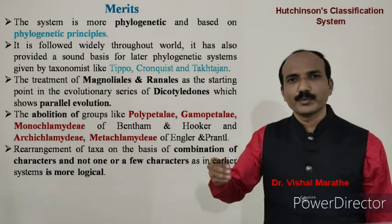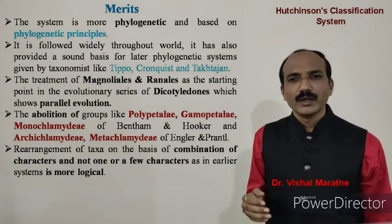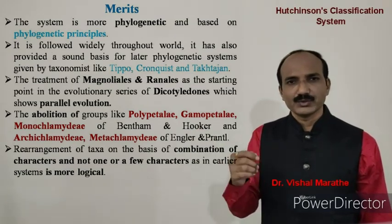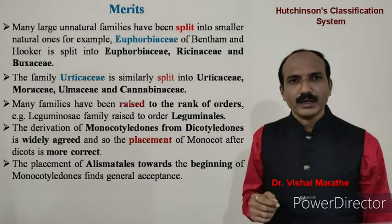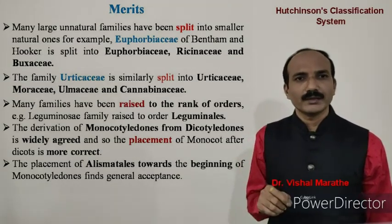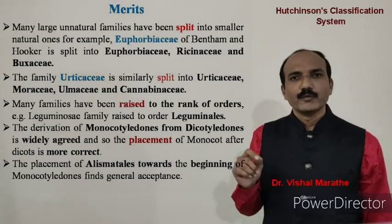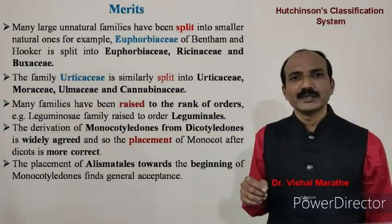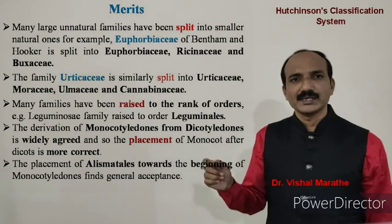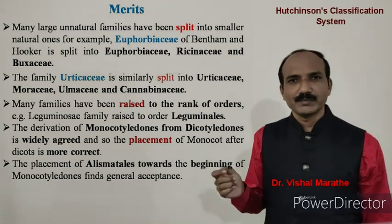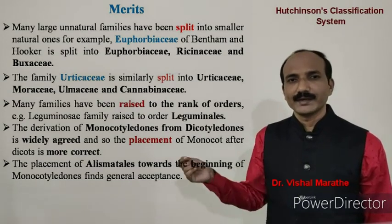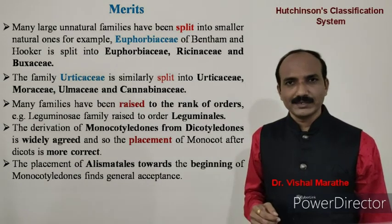Rearrangement of taxa based on a combination of characters rather than one or few characters, as in earlier systems, is more logical. Many large unnatural families have been split into smaller natural ones. For example, Euphorbiaceae of Bentham and Hooker was split into three families: Euphorbiaceae, Buxaceae, and Daphniphyllaceae. Family Urticaceae was similarly split into Urticaceae, Moraceae, Ulmaceae, and Cannabinaceae.